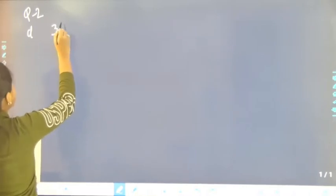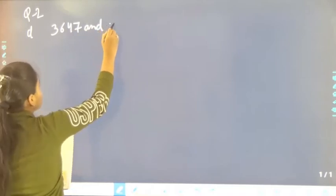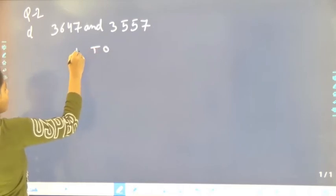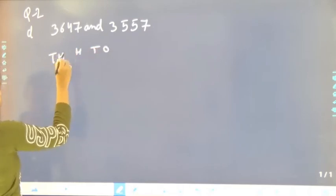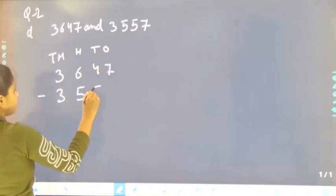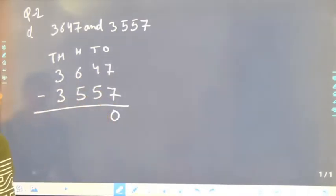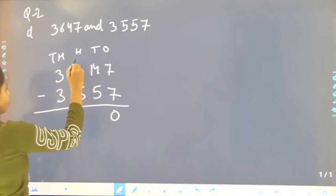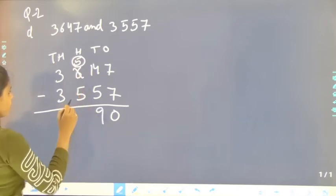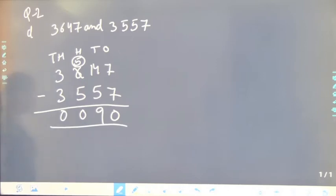The question is 3,647 and 3,557. Now we will write 3,647 minus 3,557. 7 minus 7, it will be 0. Now remaining 5 — 14 minus 5, it will be 9. 5 minus 5, 0. 3 minus 3, it will be 0. So the answer is 90.